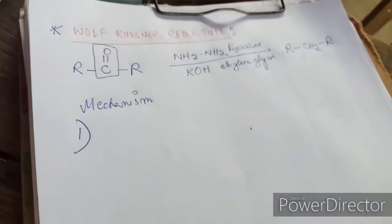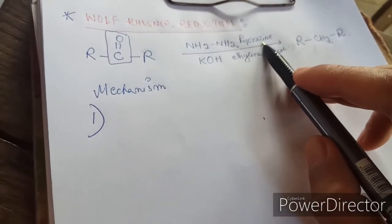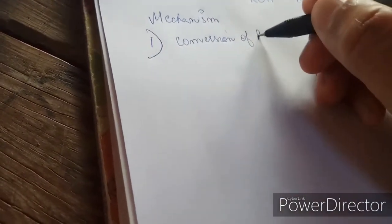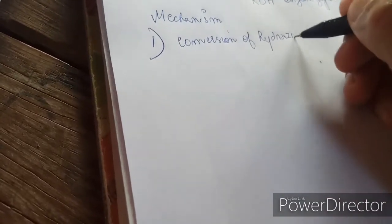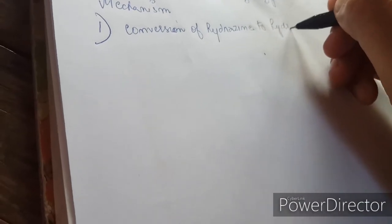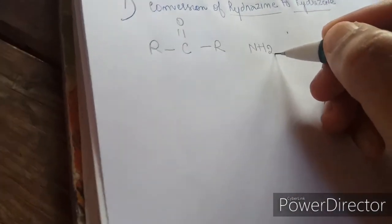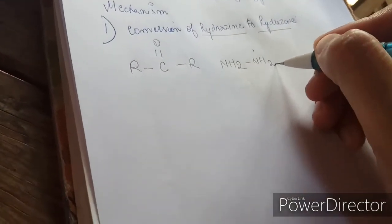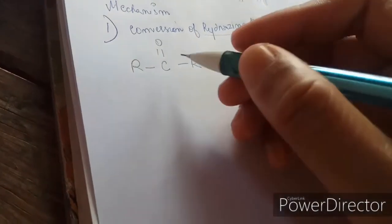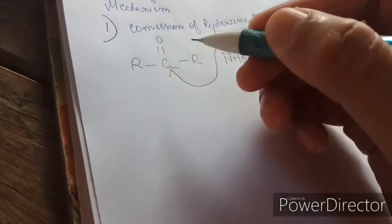The first step of the reaction mechanism is the conversion of ketone to hydrazone. I will start the reaction mechanism. The first step is conversion of the ketone with hydrazine. First, hydrazine will attack the carbonyl carbon.